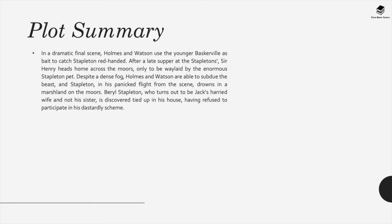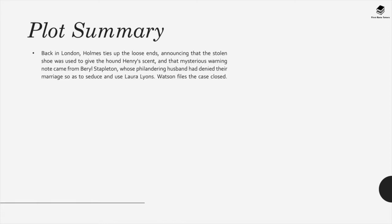In a dramatic final scene, Holmes and Watson use the younger Baskerville as bait to catch Stapleton red-handed. After a late supper at Stapleton's, Sir Henry heads home across the moors, only to be waylaid by the enormous Stapleton pet. Despite a dense fog, Holmes and Watson are able to subdue the beast, and Stapleton, in his panicked flight from the scene, drowned in a marshland on the moors. Beryl Stapleton, who turns out to be Jack's harried wife and not his sister, is discovered tied up in his house, having refused to participate in his dastardly scheme. Back in London, Holmes ties up the loose ends, announcing that the stolen shoe was used to give the hound Henry's scent, and that the mysterious warning note came from Beryl Stapleton, whose philandering husband had denied their marriage so as to seduce and use Laura Lyons.